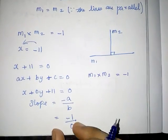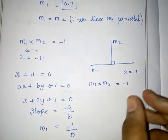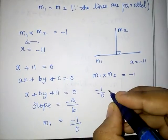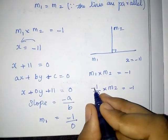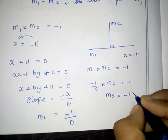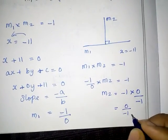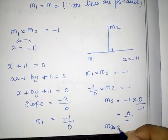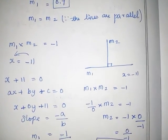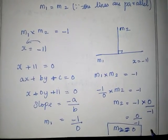So M1 is undefined (−1/0). Using M1 × M2 = −1, we have (−1/0) × M2 = −1. Multiplying both sides reciprocally, M2 = −1 × 0 / (−1) = 0. Therefore M2 is equal to 0. This is the answer for the second subdivision. If you like this video, share and subscribe. Thank you for watching.